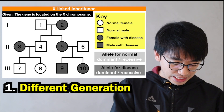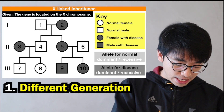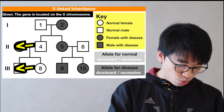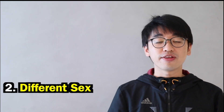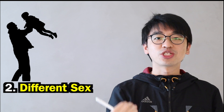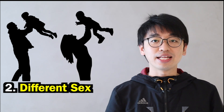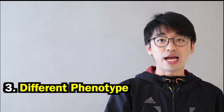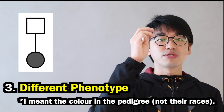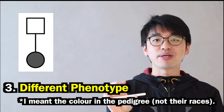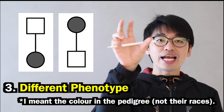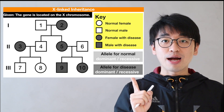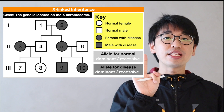Different generations means it must be across generations, like generation one and two, or generation two and three. Different sex means it must be father and daughter, or mother and son. Different phenotype means if the father is one phenotype, the daughter must show the other, or if the mother shows one phenotype, the son must show the other. Can you locate these three differences in this example?